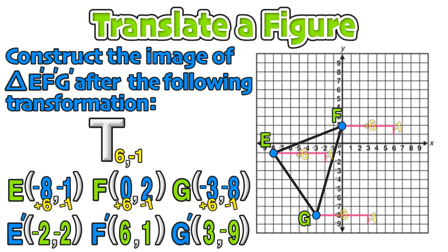Now we can look at the graph and visualize the original image being translated to the right six units and down one to its new location at E prime, F prime, G prime.